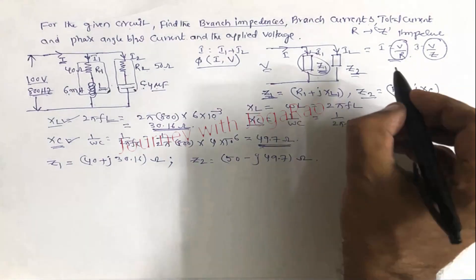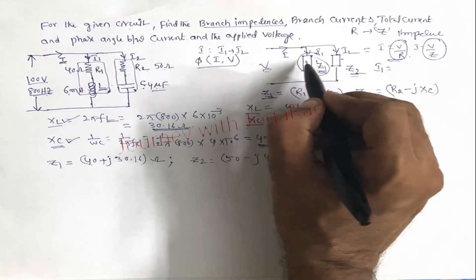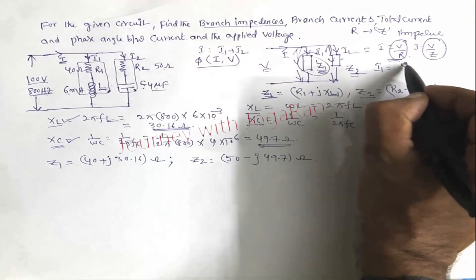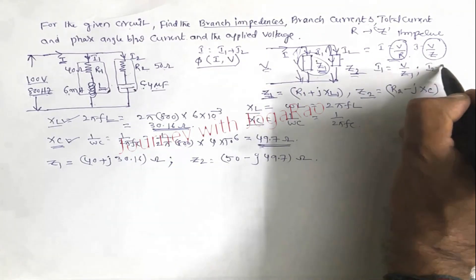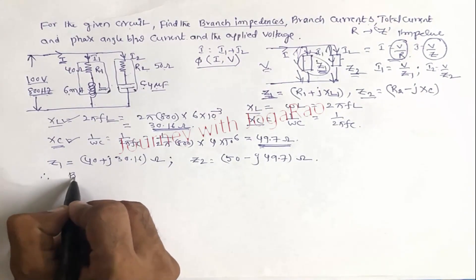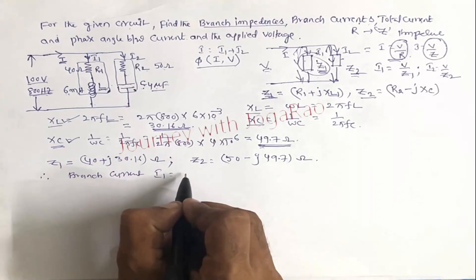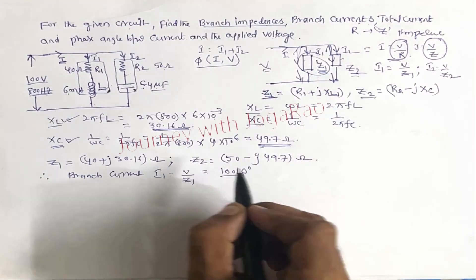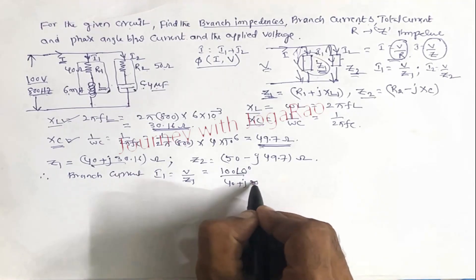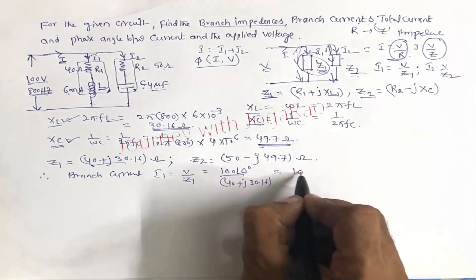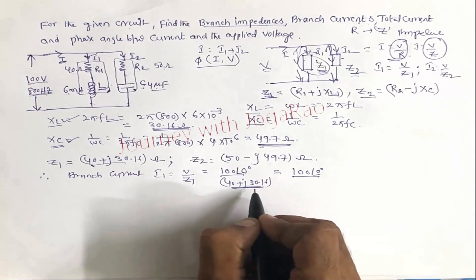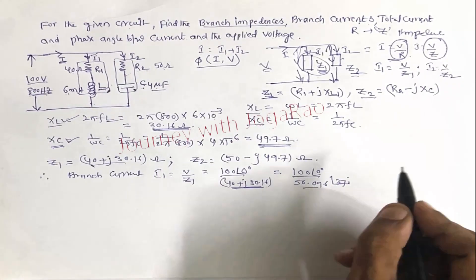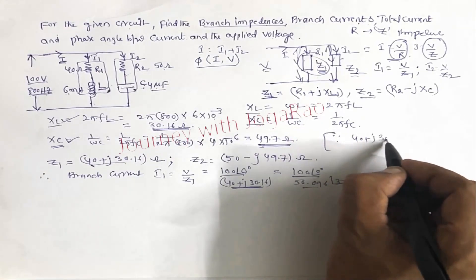Now here, I1 is equal to voltage V. In parallel, here also voltage V. I1 is equal V by Z1 and similarly I2 is equal V by Z2. Therefore branch current i1 is equal V by Z1. V at an angle 0 degrees by Z1 value, 40 plus j 30.16.